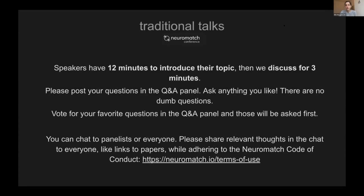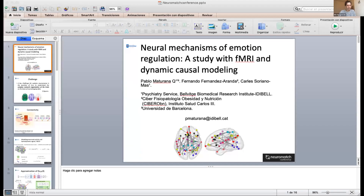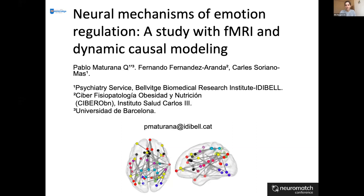I'm happy to introduce our first speaker, Pablo Maturana from the University of Barcelona. Pablo is going to be talking about the neural mechanisms of emotional regulation: a study with fMRI and dynamic causal modeling. Pablo, if you want to share your presentation with us. Okay, I can start now.